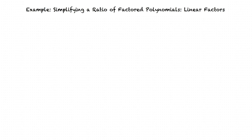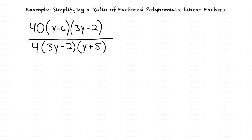This is an example video for the topic Simplifying a Ratio of Factored Polynomials — Linear Factors. Let's start with the example problem: 40 times (y minus 6) times (3y minus 2), divided by 4 times (3y minus 2) times (y plus 5).